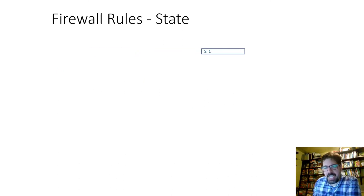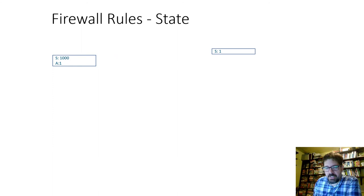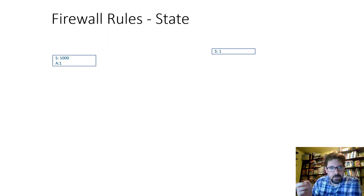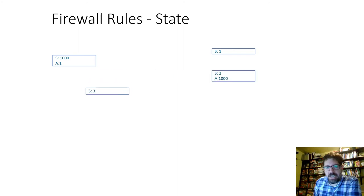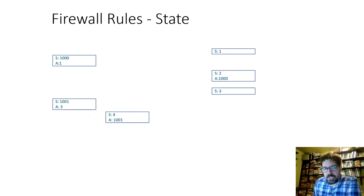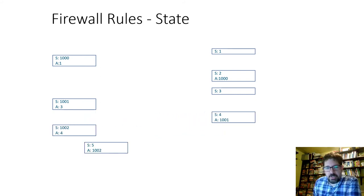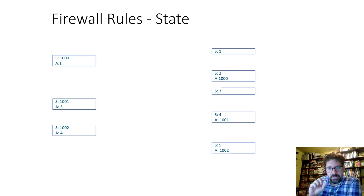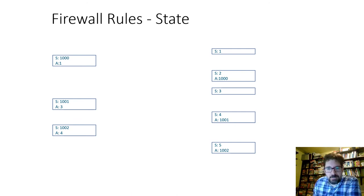To show how firewall state works: as packets flow back and forth with sequence and acknowledgement numbers, the firewall can track the state of an established connection. If an attacker tries to inject a packet with fabricated sequence or acknowledgement numbers, the firewall recognizes it doesn't match the known connection state and drops it. You'd have to know the exact sequence and acknowledgement numbers to spoof successfully, which makes such attacks much harder.